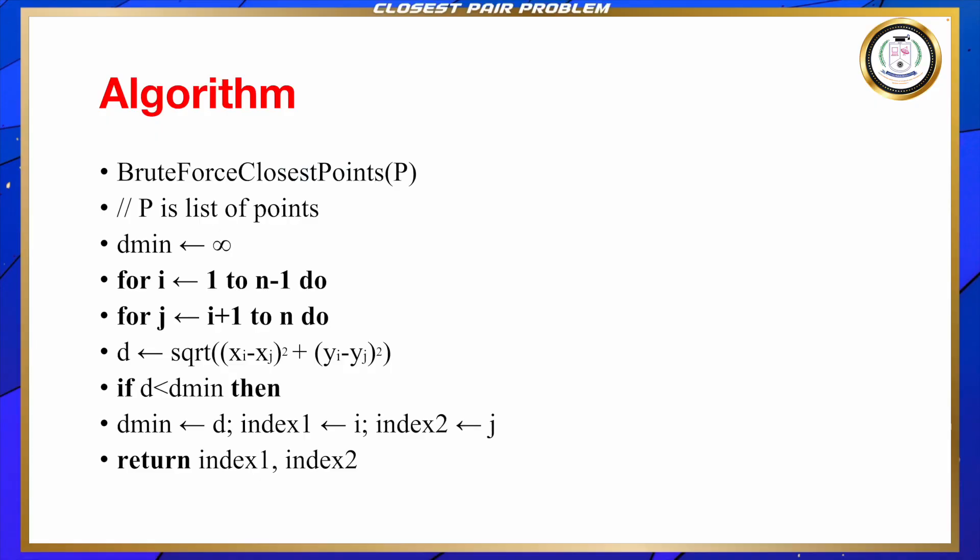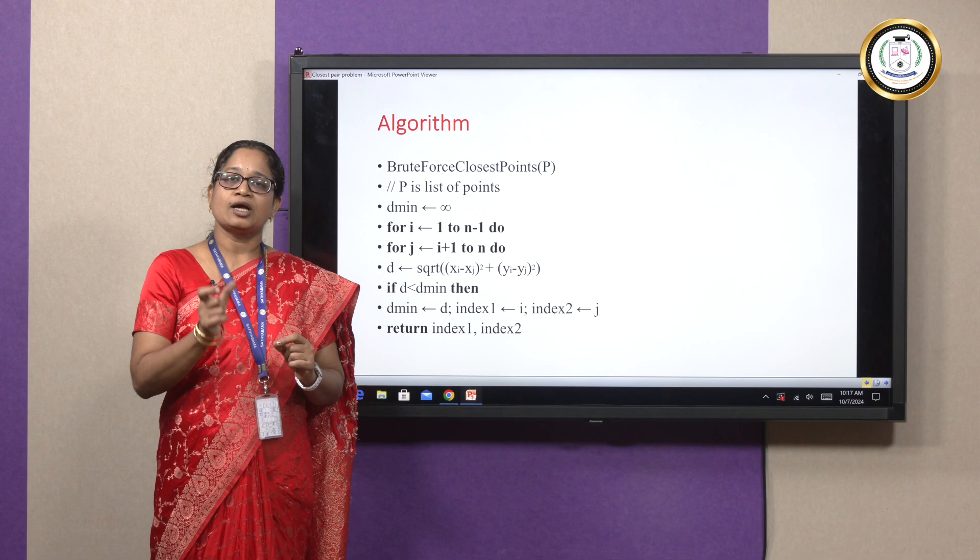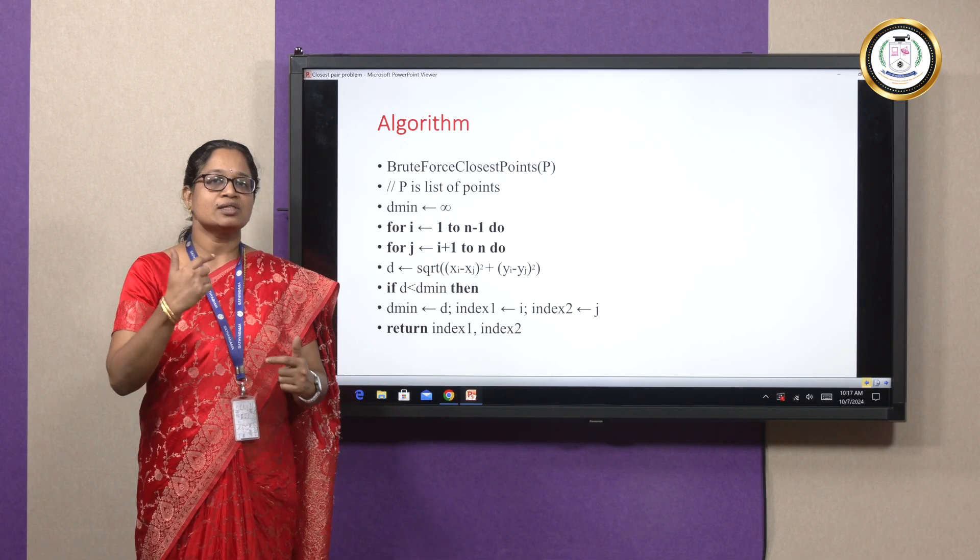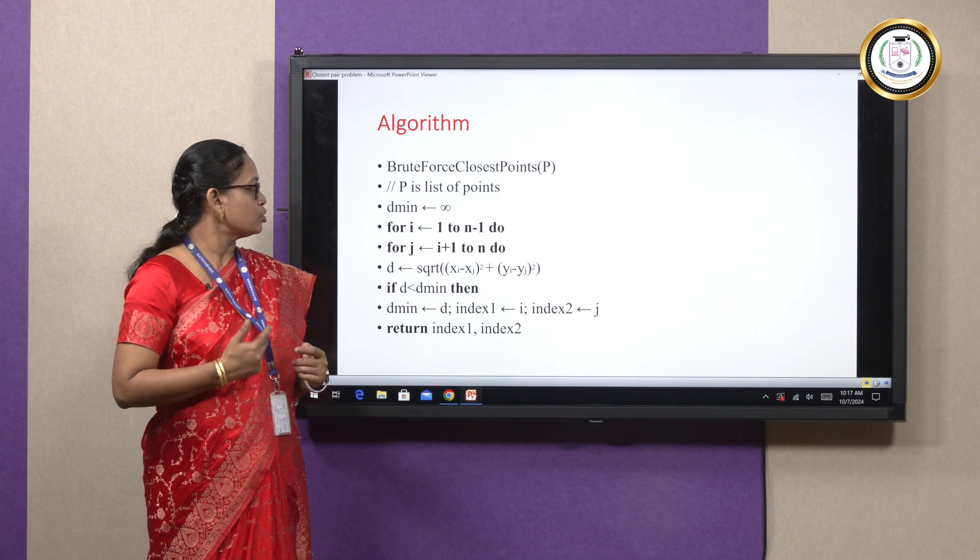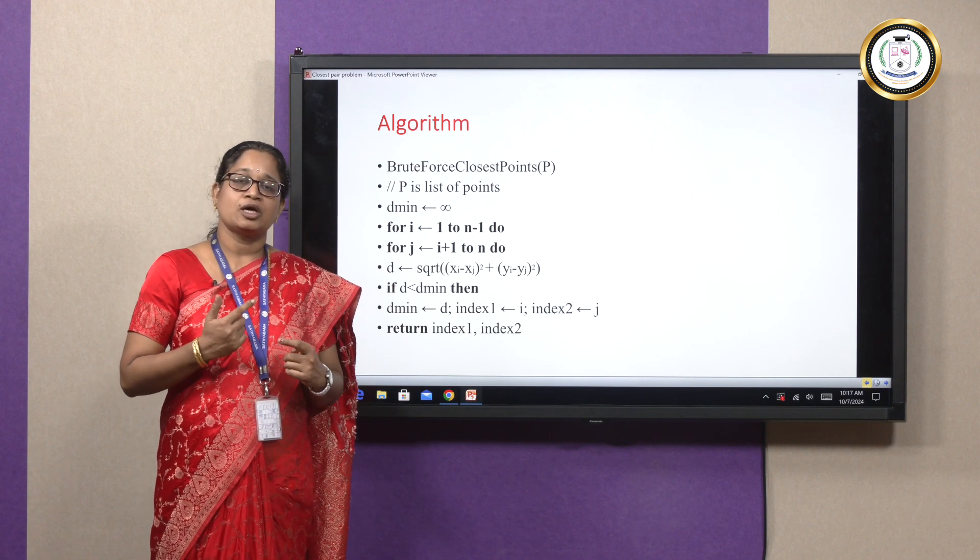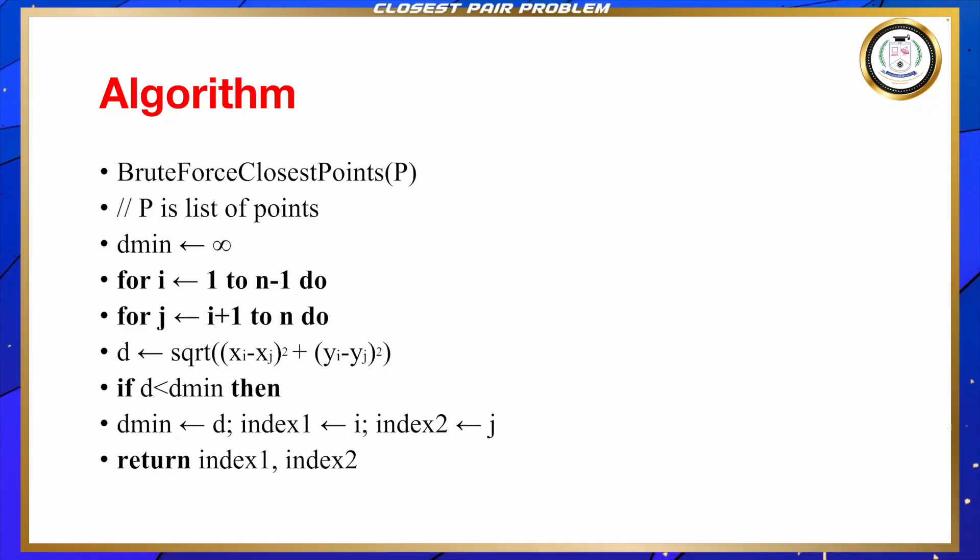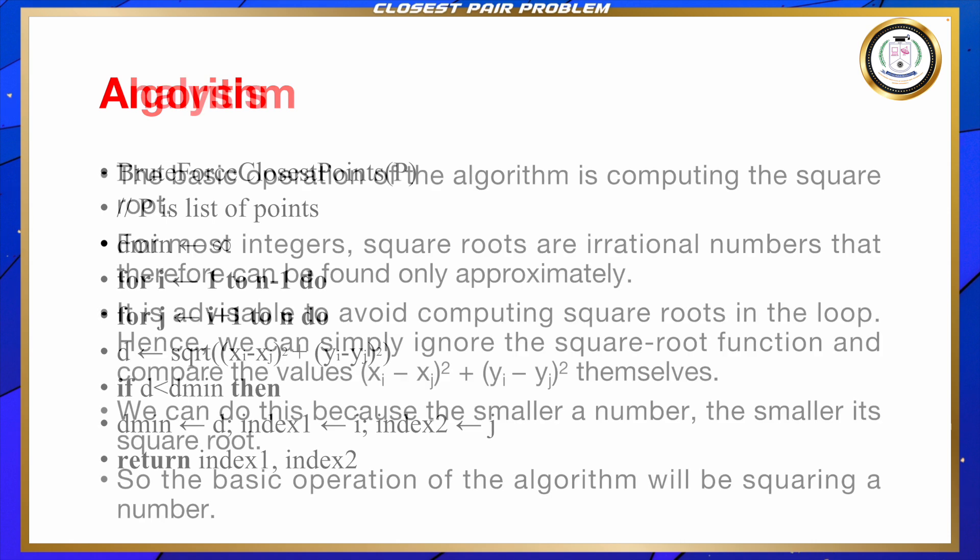The algorithm is quite simple. This algorithm computes all pairs of points. The initial value of i is 1, the initial value of j is i+1 which is 2. It computes the distance between point 1 and 2 first. In the second iteration it computes the distance between point 1 and 3 then 1 and 4 and so on. This algorithm computes the distance between each and every pair of points in the plane.